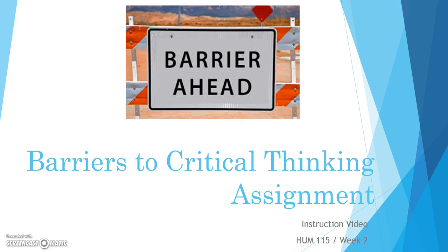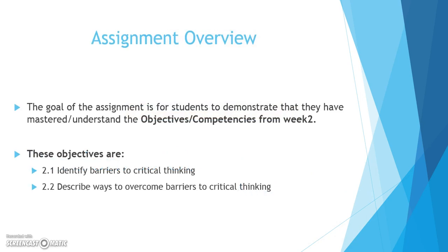We're going to be taking a look at all of those things in the context of this assignment. The goal of the assignment is so that students can understand the objectives from week 2, and I've listed these objectives here. The first objective this week is being able to identify barriers to our critical thinking — barriers are those things I was just mentioning. They can be internal or external, but anything that's impacting and influencing how you think and preventing you from being able to weigh and question both sides of an issue.